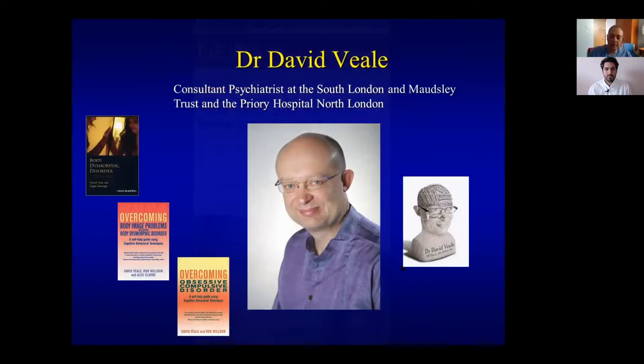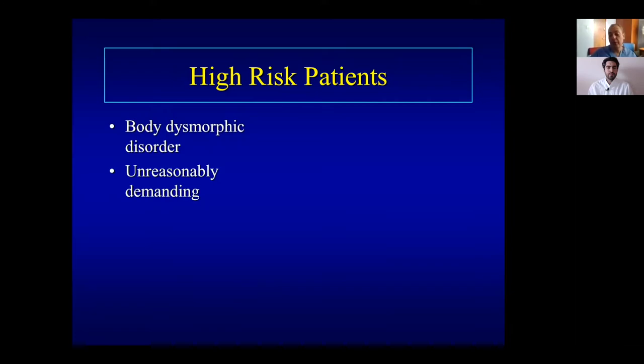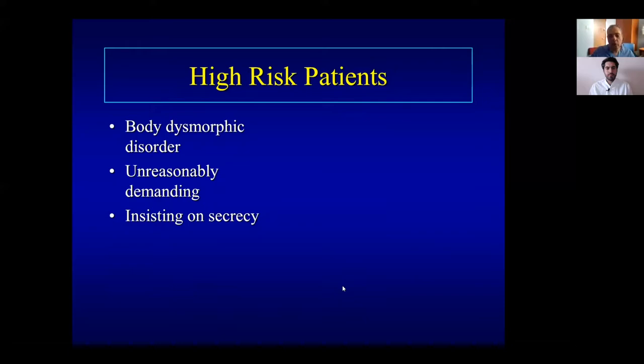There is a high-risk group of patients you must be aware of and avoid operating on. Number one is body dysmorphia. Number two is the patient who demands too much — wanting the operation now or next week — they usually expect too much. Some patients insist on secrecy, not wanting anyone to know about the operation; rhinoplasty is a big operation requiring psychological support. The 'surgeonholic' has had four, five, or six operations and the nose doesn't look too bad — many of these patients have body dysmorphia and keep going back.